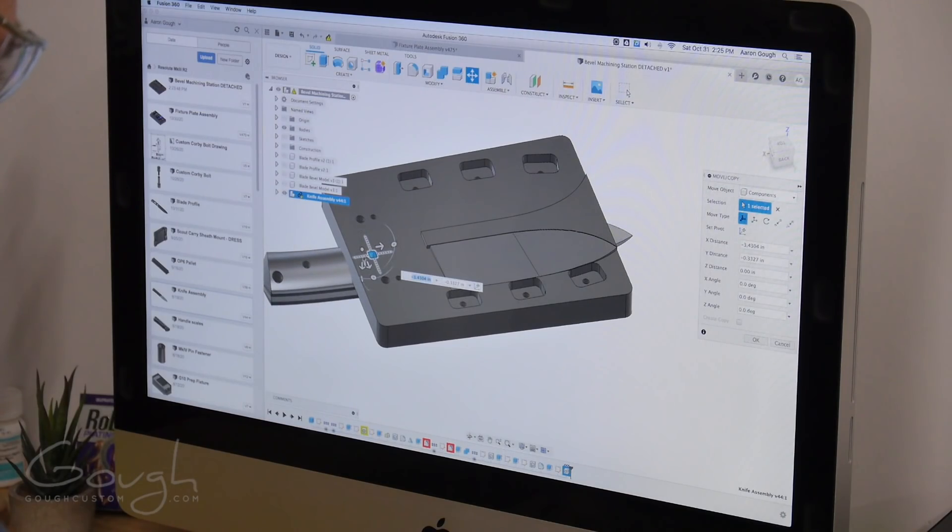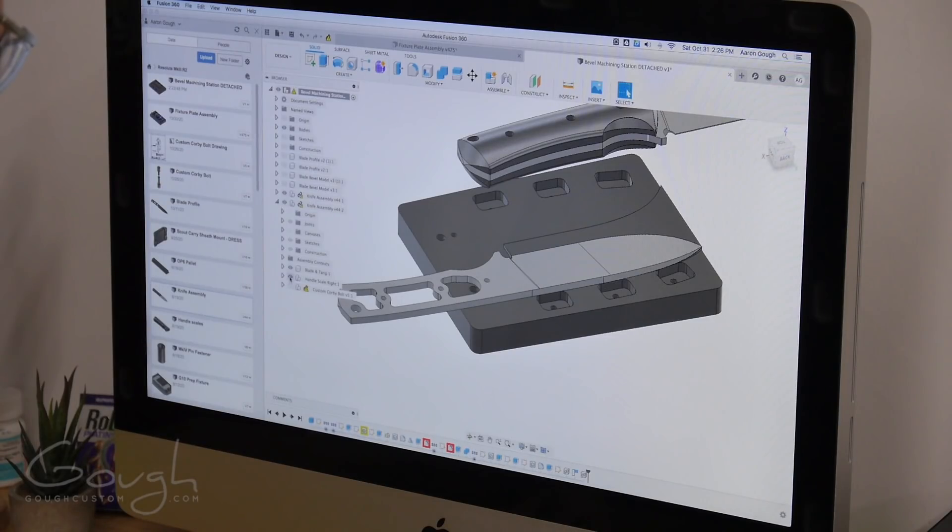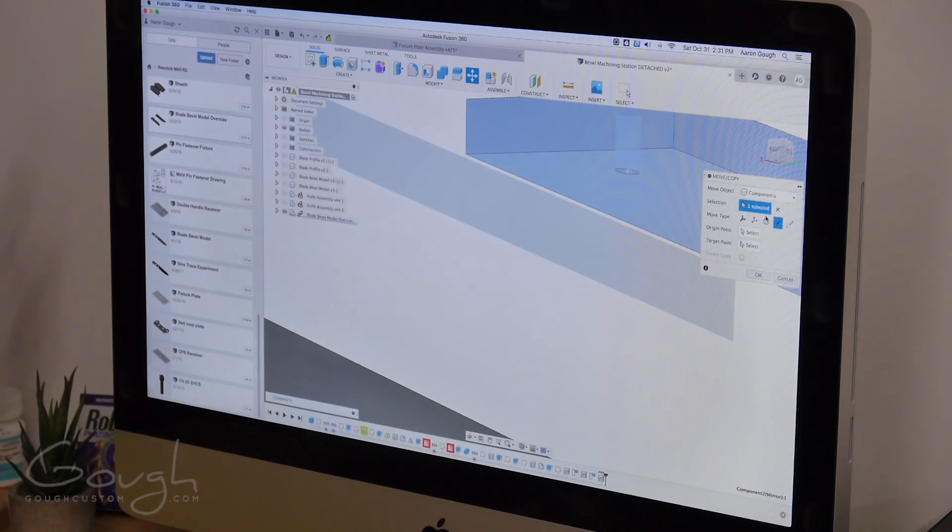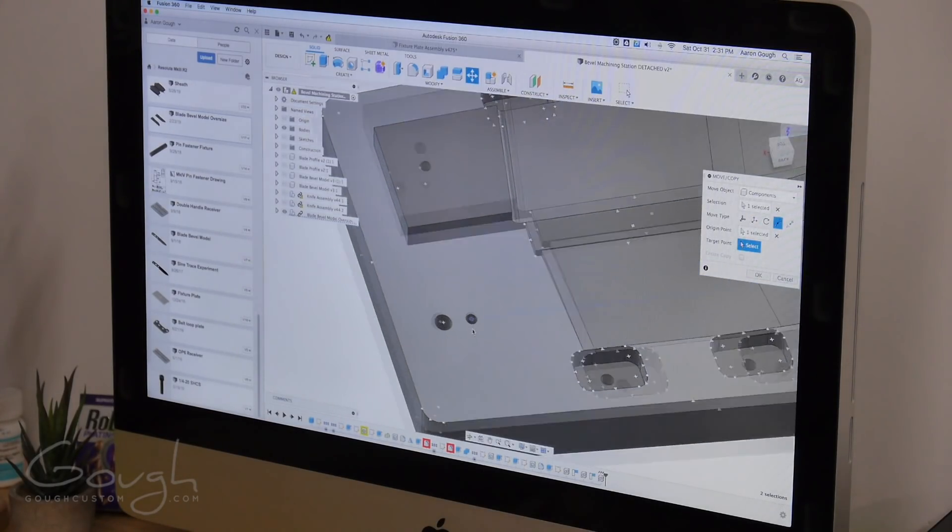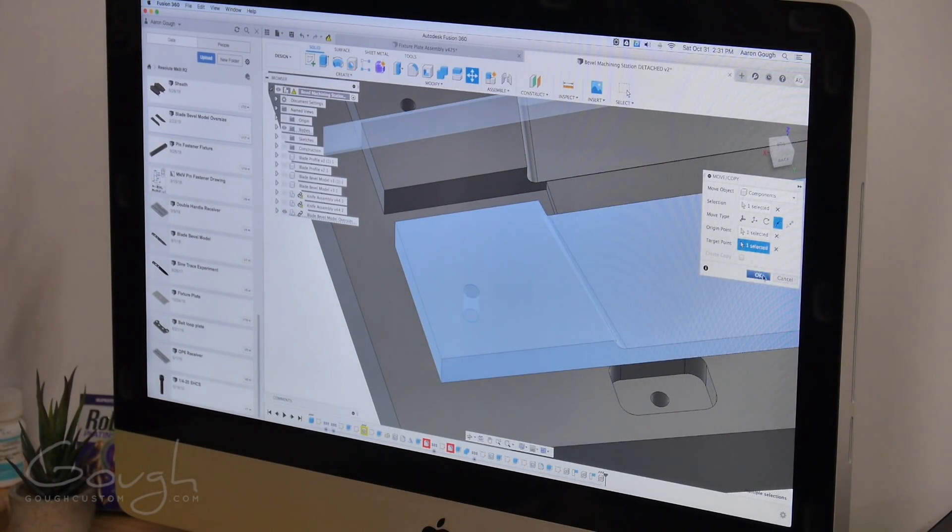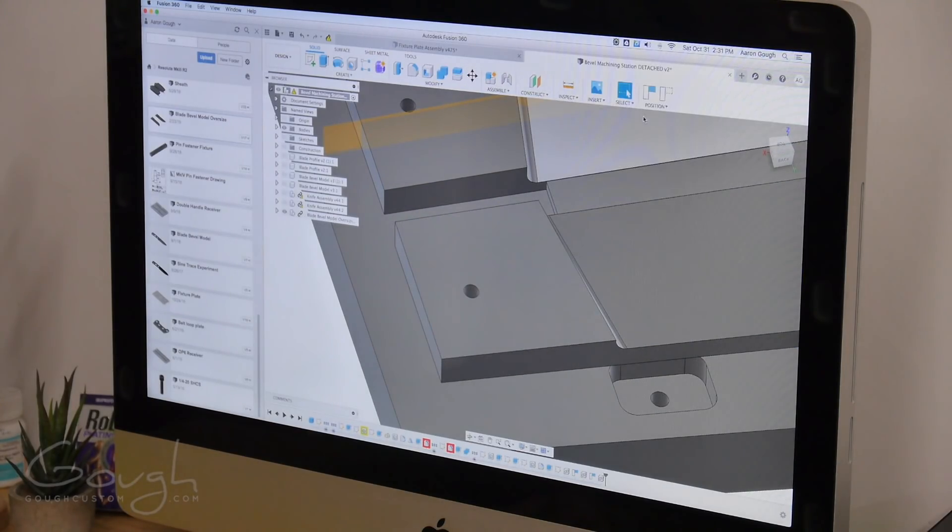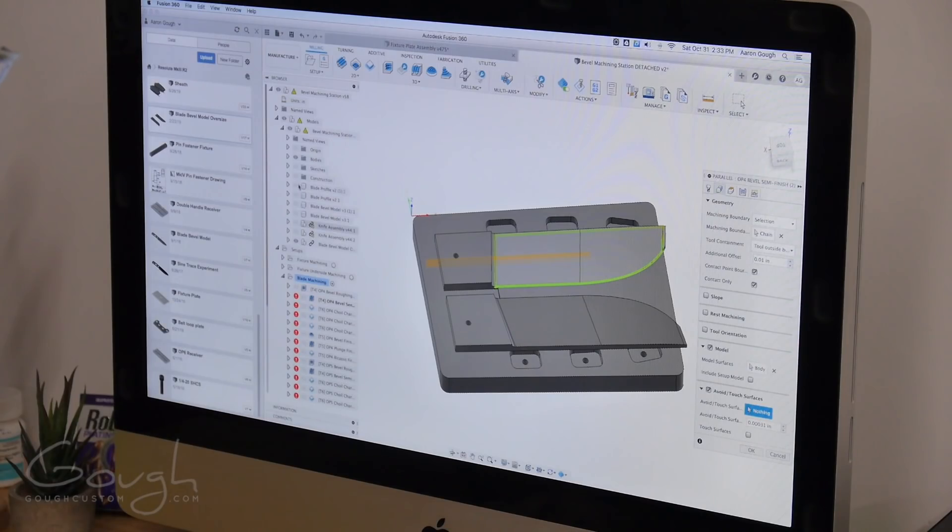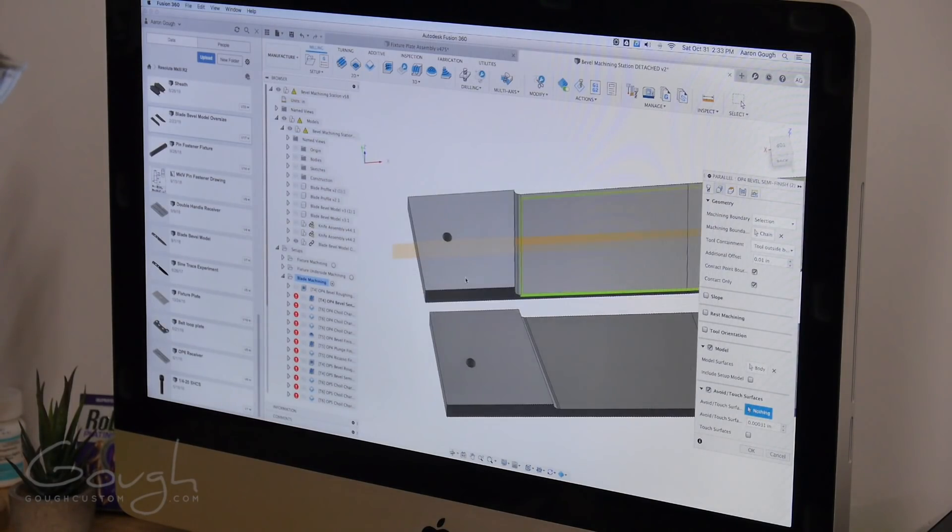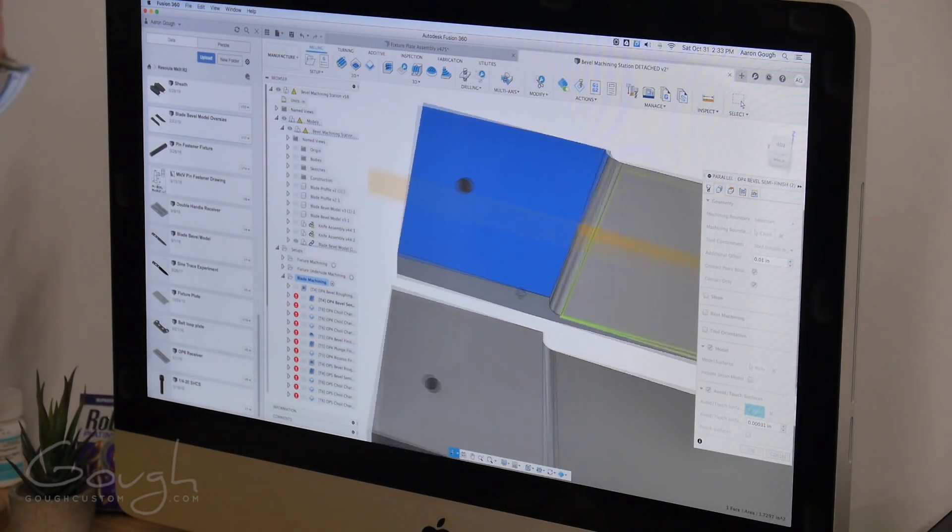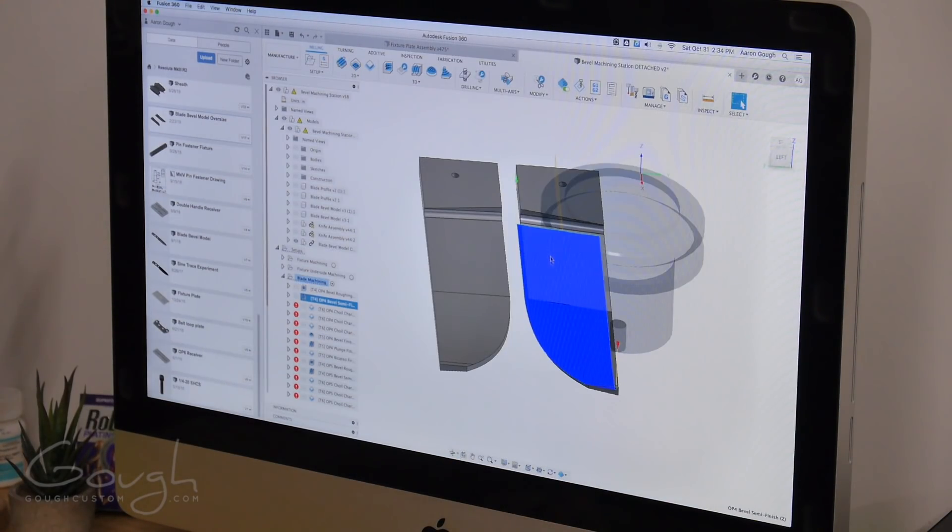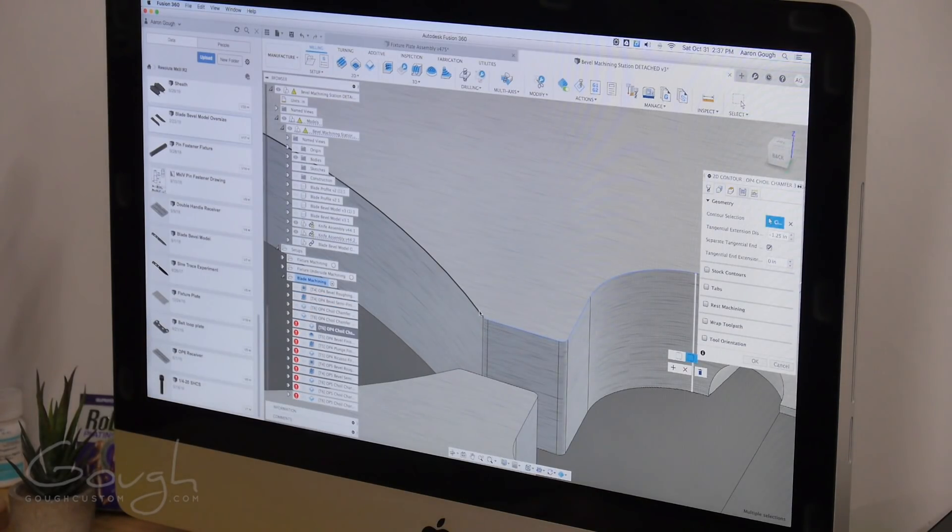With the fixture itself completed now I have to go through and design the toolpaths for actually machining the blades using the fixture. Because my CNC machines are not quite as accurate and fast as a new machine, I do have some tricks that I use in order to make the machines perform better. One of those tricks is the use of these oversized blade models that trick the machine into changing directions when it's not actually in contact with the real blade. This helps reduce gouging at the edges of the toolpath.